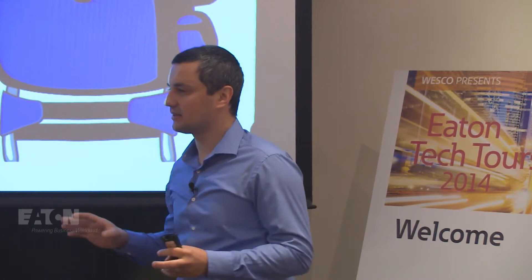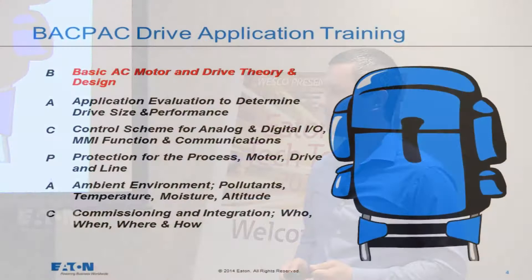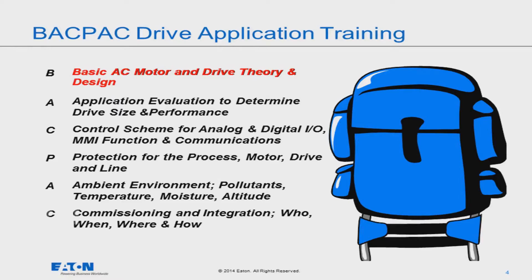Think about this backpack just like packing an actual backpack. You put everything in there so it's as balanced as possible, starting from the base where you put the heavier stuff. B is for basic AC motor and drive theory design — that's your base. A is for application evaluation to determine drive size and performance. C is for control scheme — analog, digital IOs and communication. P is for protection: process, motor, drive, and line. A is for ambient environment: pollutants, temperature, moisture. And C is for commissioning and integration. We're going to touch on each of these today.